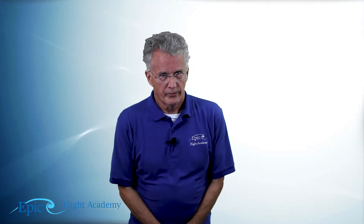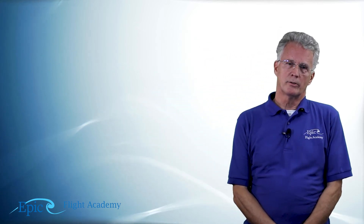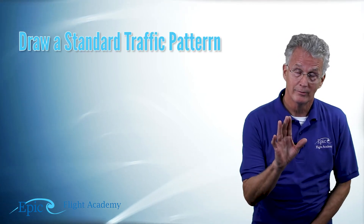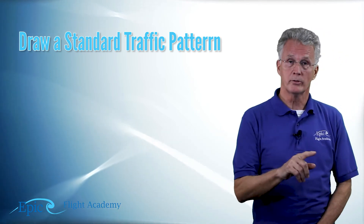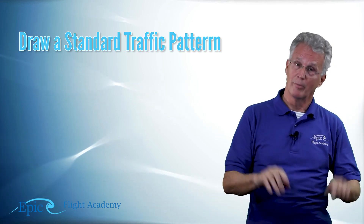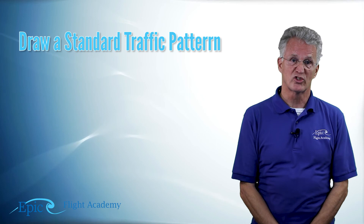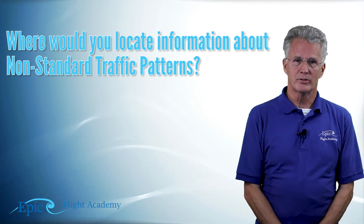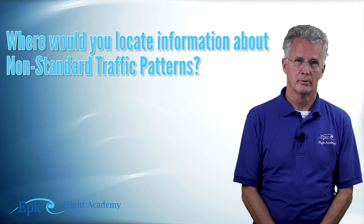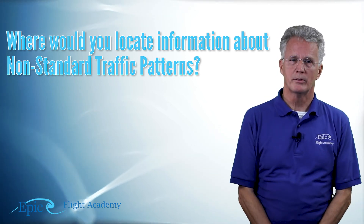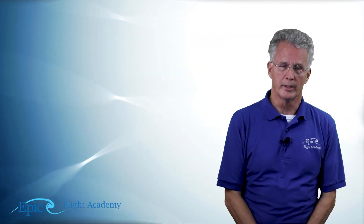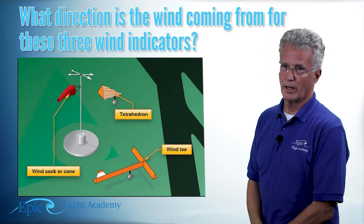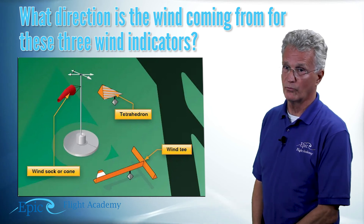Here are a few review questions for this segment. First, take a piece of scrap paper and draw a standard traffic pattern — draw the standard direction and all the legs. Second, where would you locate information about non-standard traffic patterns? Think about your sources of information and which source you might use. Third, take a look at these three wind indicators — can you tell the direction of the wind from each of the diagrams?